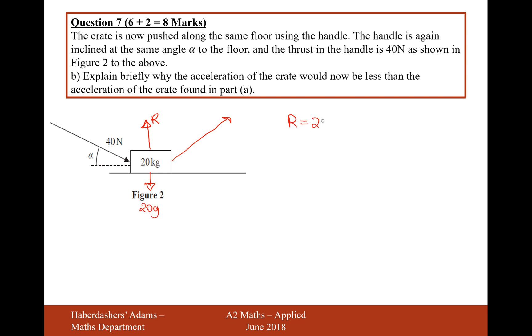R equals 20G plus this force acting down here. That's going to be 40 sine α acting downwards. So therefore, as the R value, as the reaction force has increased, so will friction resulting in less acceleration.